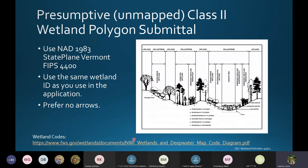Remember to use the wetland codes within the Cowardin Classification System. We'd like you to use the datum NAD83. We prefer you use the same wetland ID code in your application as in your shapefile so it's easier to connect. Also, please don't create arrows in the shapefiles when a wetland continues beyond, because we have to correct those — we're not including those arrows in the official inventory.